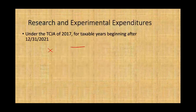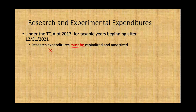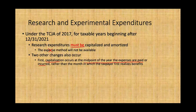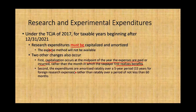Looking forward, under the Tax Cuts and Jobs Act of 2017, the IRS is becoming more restrictive. Starting 2021, research and experimental expenditure must be capitalized and amortized — the expense method is no longer available. This will always create a difference between GAAP and IRS, since GAAP will always expense R&D while the IRS now says amortize it. Additionally, capitalization occurs at the midpoint of the year the expenses are paid or incurred, and expenditures are amortized over a five-year period — or 15 years for foreign research — rather than over a period of not less than 60 months.